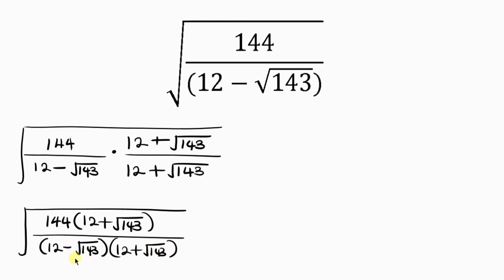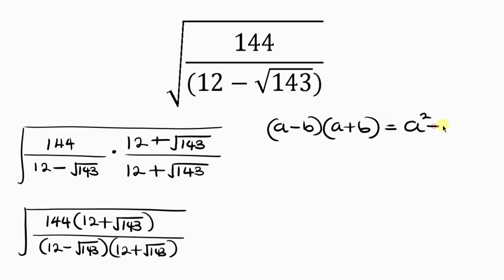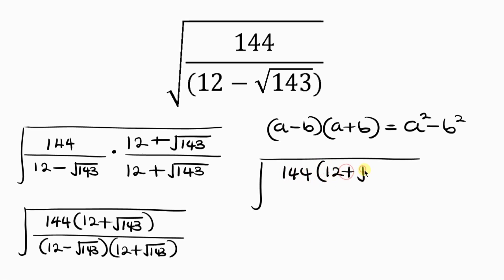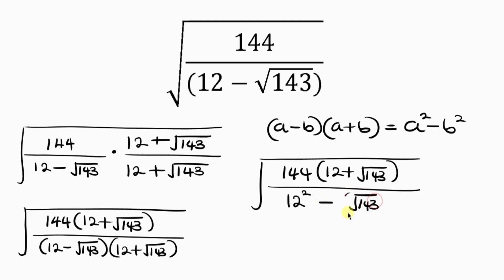Take note of the denominator. It is of the form (a minus b)(a plus b), which is written as a squared minus b squared. So we're going to write the denominator in this form. We have the square root of the numerator: 144 times 12 plus the square root of 143, all over 12 squared minus the square root of 143 squared.